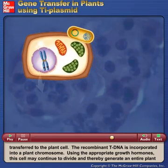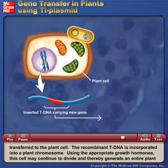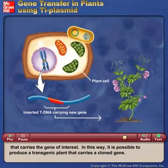The recombinant T-DNA is incorporated into a plant chromosome. Using the appropriate growth hormones, this cell may continue to divide and thereby generate an entire plant that carries the gene of interest. In this way, it is possible to produce a transgenic plant that carries a cloned gene.